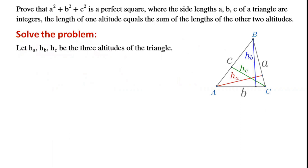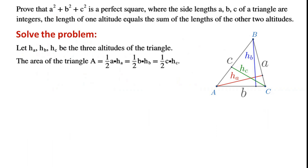Let HA, HB, HC be the three altitudes of the triangle. The area of the triangle equals one half A times HA, equals one half B times HB, equals one half C times HC.